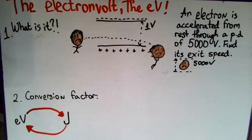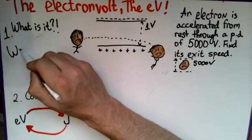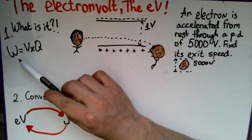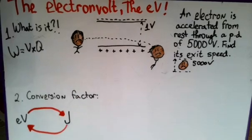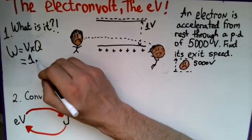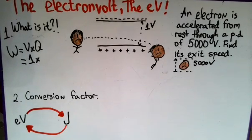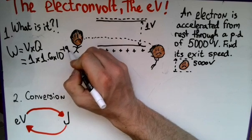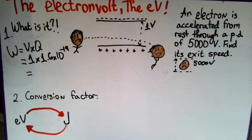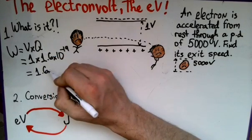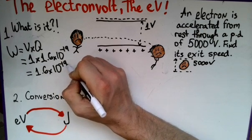What is the actual value of the electron volt? We can use the good old W = V × Q equation. Remember, electrical energy, or work done, is equal to voltage multiplied by the charge. In this case, the voltage is just one volt, and our charge is just the elementary charge, which is 1.6 × 10⁻¹⁹. So that's just 1.6 × 10⁻¹⁹ joules.